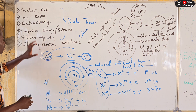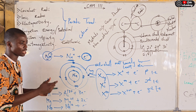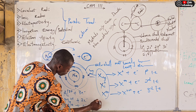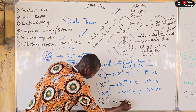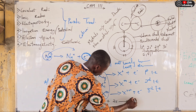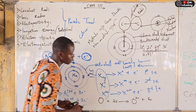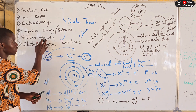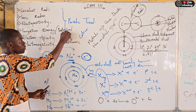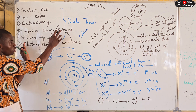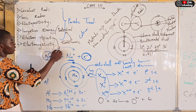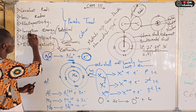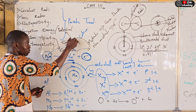The next periodic trend is electron affinity. The energy that is given out after an atom has accepted an electron is also referred to as electron affinity. For example, oxygen plus two electrons gives O²⁻ plus energy. The energy given out from this reaction is referred to as electron affinity, and electron affinity is an exothermic process. Ionization energy or ionization potential is endothermic, but electron affinity is exothermic — energy is given out from the reaction, while for ionization potential, energy is absorbed from the surroundings.